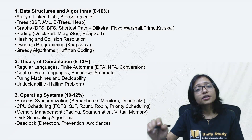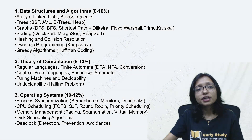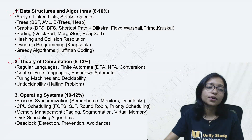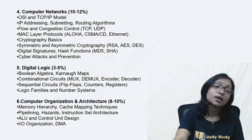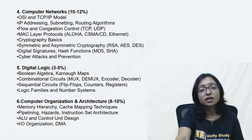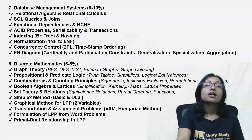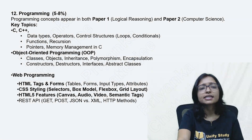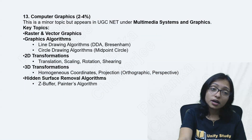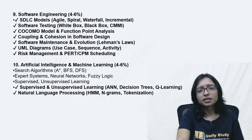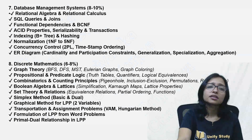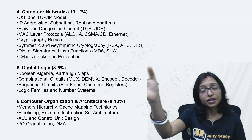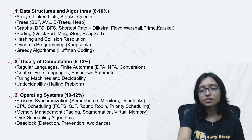These are the many topics in the syllabus: data structure, theory of computation, operating system, computer network, digital logic, computer architecture, database, discrete math, software engineering, artificial intelligence, programming, graphics — so many topics are there. Actually, if you divide the 10 units, there will be about 15 subjects for computer science.